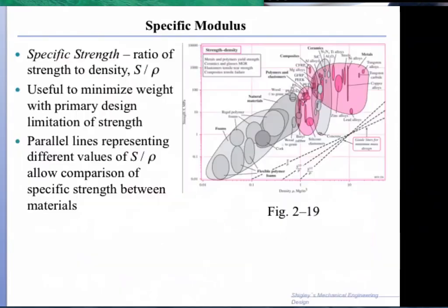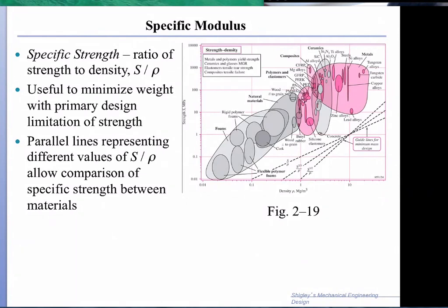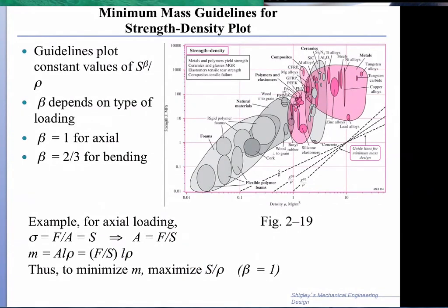Using analysis similar to what we did before, we would look for maximization of powers of S over rho. Either S over rho for axial, so we maximize directly S to the power beta over rho is the function that we want to maximize, so beta is equal to 1 for axial, and beta is equal to 2/3 for bending.